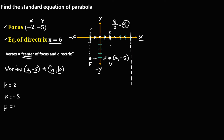For P, P is positive 4. To graph the parabola, since the focus is always inside the parabola — the focus is at (−2, −5) and the vertex is at (2, −5) — the focus is to the left of the vertex, so the parabola opens to the left.